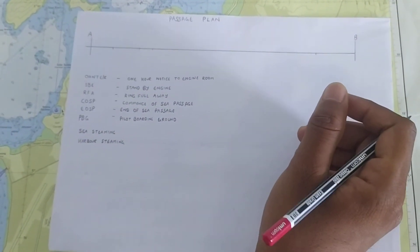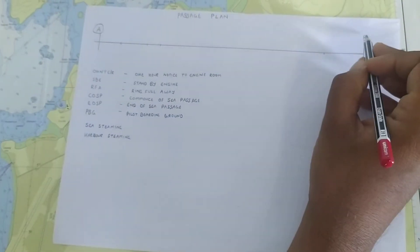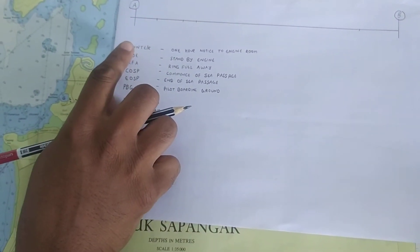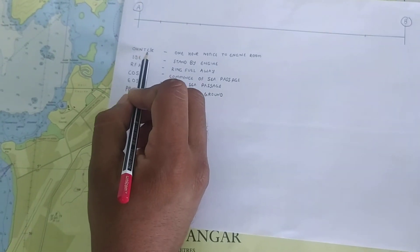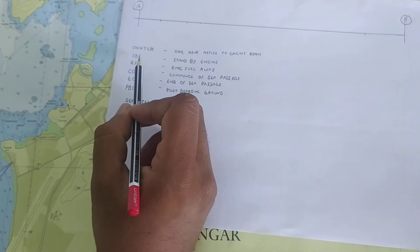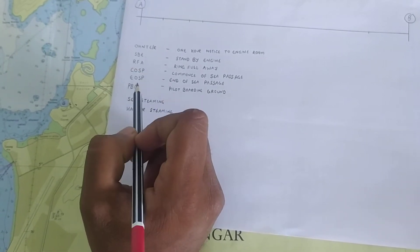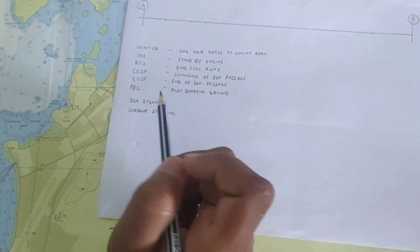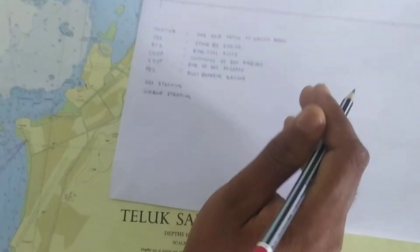How do you plan a passage? Suppose we are going from point A to point B, there are a few things that we will be writing in the bell book. One is one hour notice to engine room, next is standby, then comes ring full away, then comes commencement of sea passage, then comes end of sea passage and sea steaming and harbour steaming.